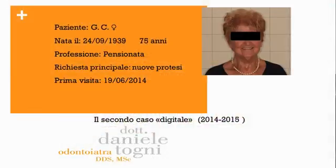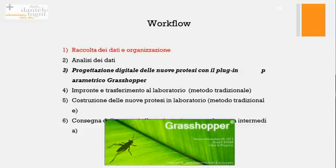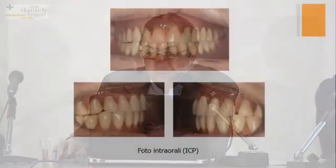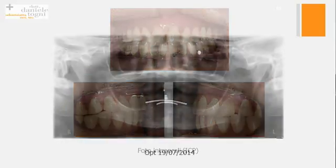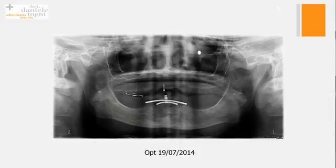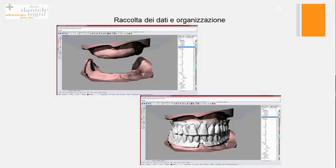Adesso molto rapidamente vi faccio vedere un secondo caso di protesi totale implementando Grasshopper, che è questo plugin parametrico. Plugin parametrico vuol dire semplicemente che con questa modifica del software siamo in grado di mettere dentro dei parametri e giocarci direttamente nello spazio virtuale. Questa è la protesi vecchia della paziente, la panoramica. Questi sono i due modelli delle mucose e delle protesi montate nello spazio virtuale. Con Grasshopper siamo stati in grado di importare il tracciato reale, tutti i valori del tracciato coniografico.